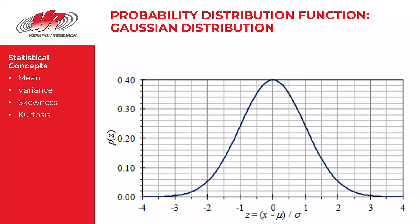These statistics are the mean, the variance, the skewness, and the kurtosis. The mean is the average, the average acceleration value. So on this plot here, the average is represented by this zero value.